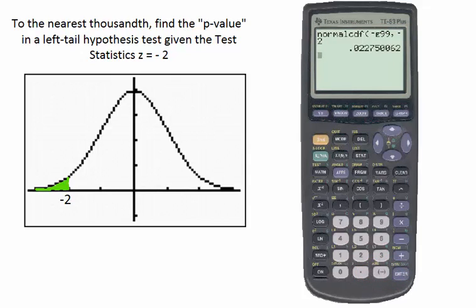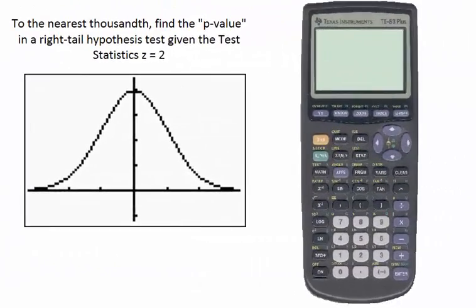Here we see, to the nearest thousandths, the p-value — or area under the curve to the left of negative 2 — is 0.023.